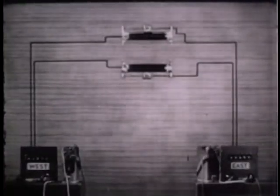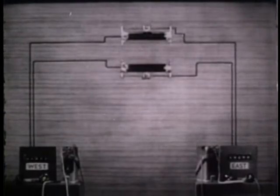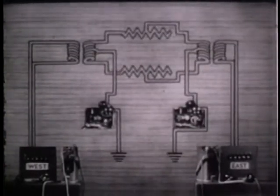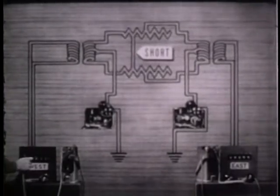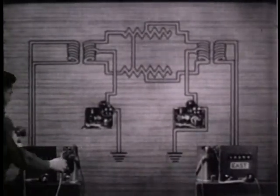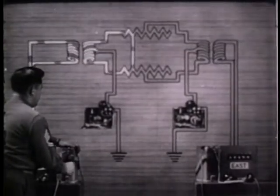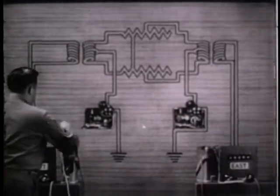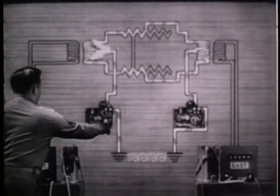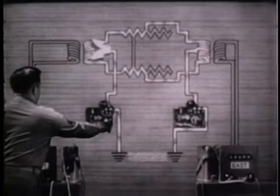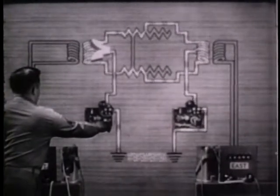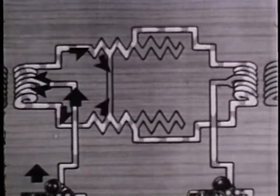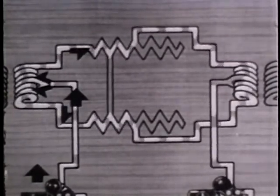Let's take the simple example of a telephone circuit which has been simplexed for telegraph. Suppose the line is accidentally shorted. What happens to the telephone current? Because of the short, it never reaches its destination. The telegraph current, however, follows its normal path — it divides equally and flows along the two line wires. At the short, the two halves of the current oppose each other, and so no current flows through the short.